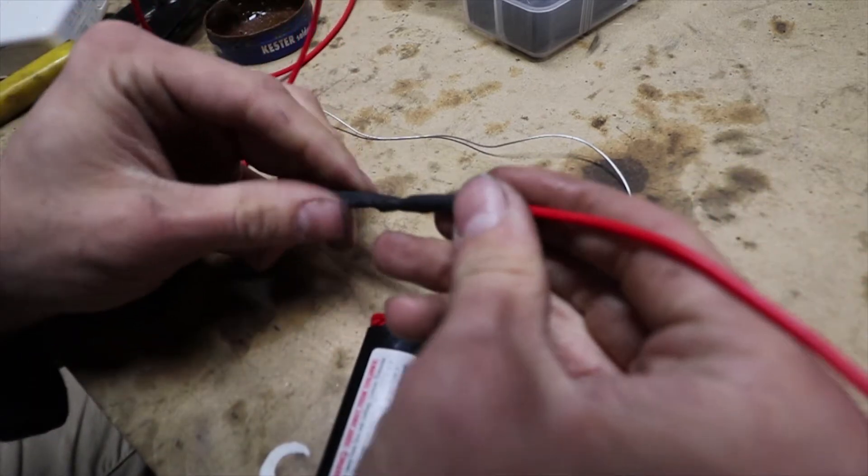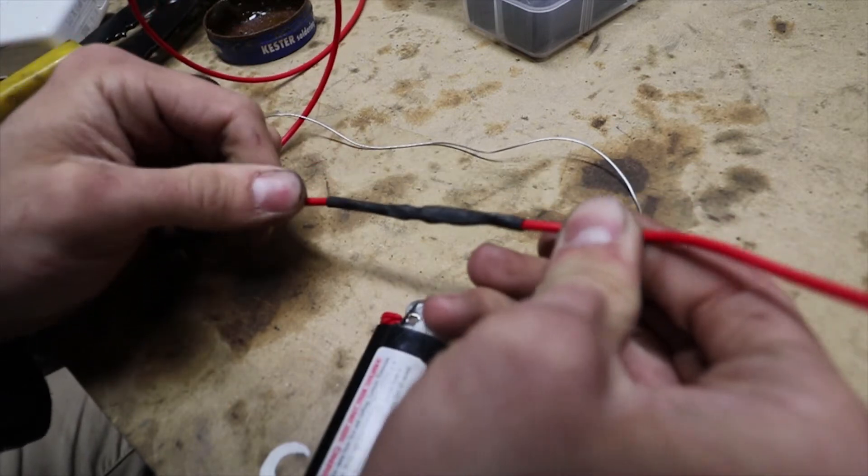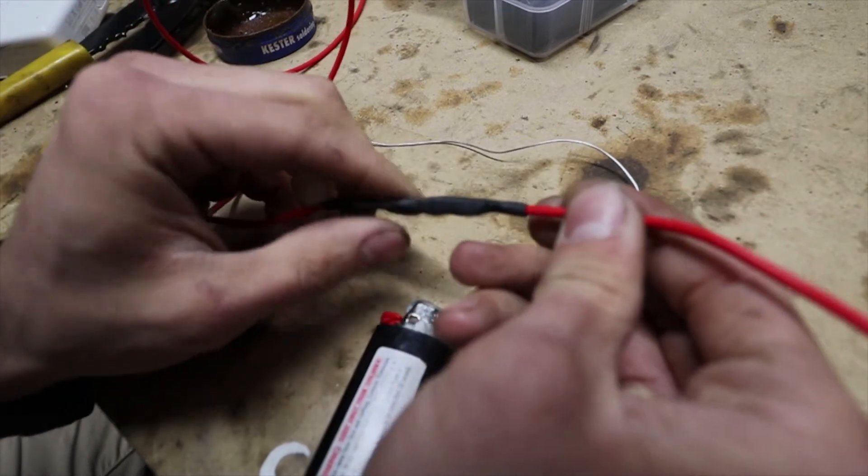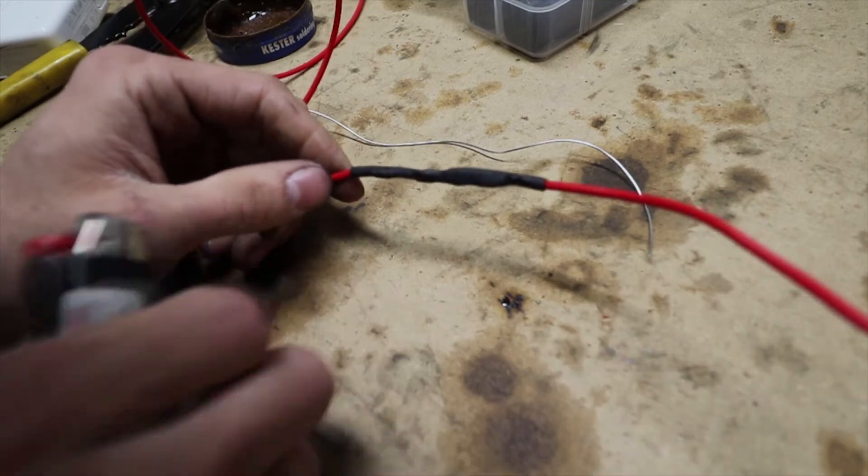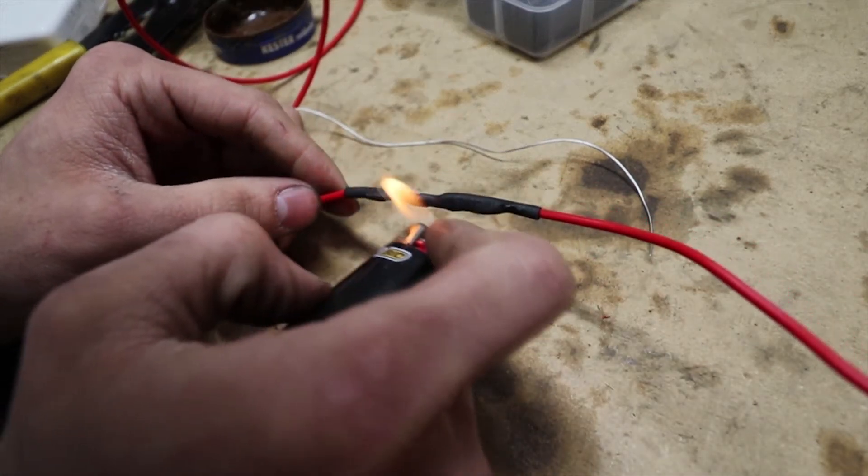Now there you go. You got a nice sealed strong connection. Now supposedly this is one of the strongest connections you can do because it adds that second redundancy in there. It's basically like having two lineman splices instead of just one.